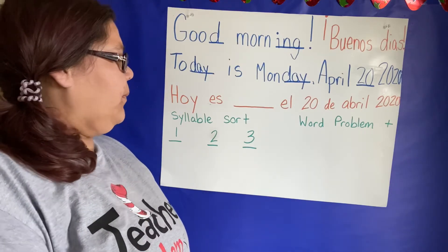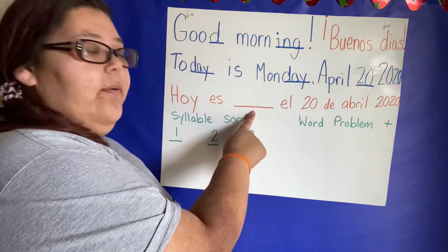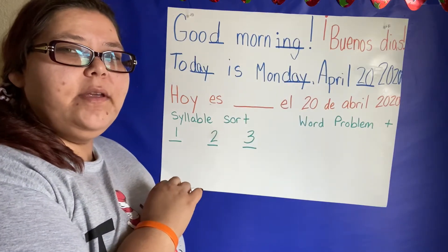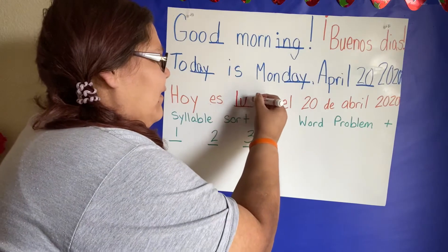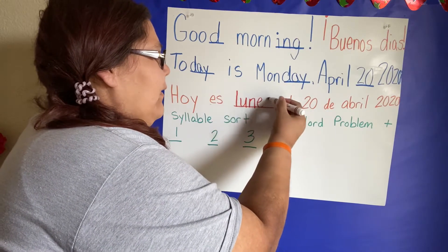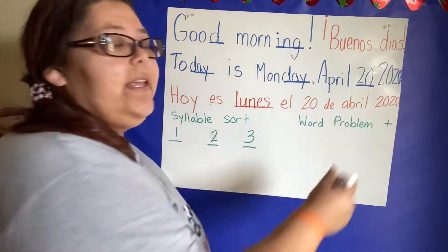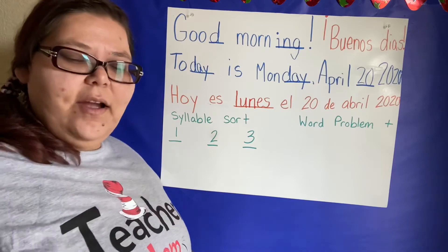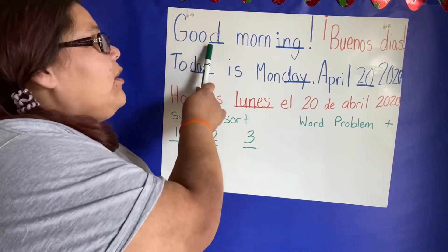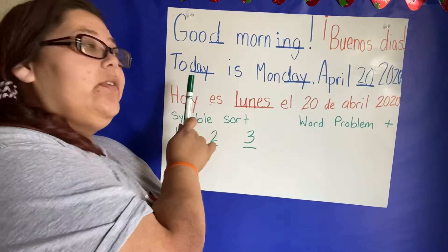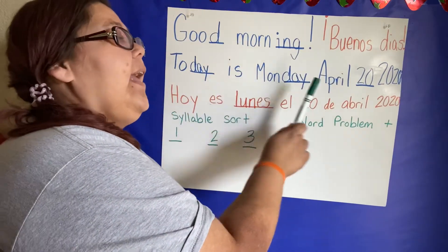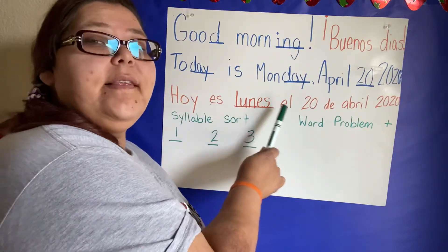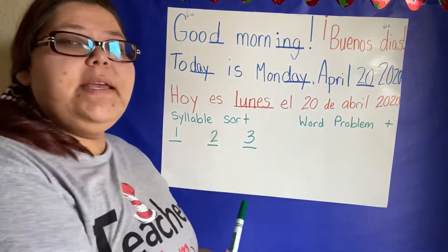Let's look at our Spanish — en español. Hoy es... ¿Cómo se dice Monday en español? How do you say Monday en español? Lunes. El veinte de abril, dos mil veinte. Let's say our morning message together. Are you ready? Good morning. Buenos dias. Today is Monday, April 20, 2020. Hoy es lunes. El veinte de abril, dos mil veinte.